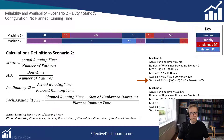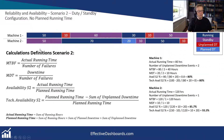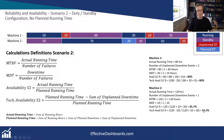Looking at technical availability for machine two, we've got a planned running time of 150 hours and unplanned downtime of 10 hours. So the numerator is 150 - 10 = 140, divided by the planned running time of 150, giving 93% technical availability — because we've excluded planned downtime from the numerator. Hopefully that's clear in your head before we get into Power BI and start putting some code together.